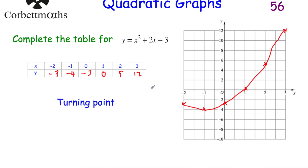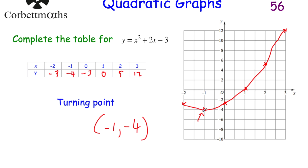There's another part to this question: write down the coordinates of the turning point, also called the minimum point. This graph has a minimum — the lowest point — which is at negative 1, negative 4. When you have an x squared quadratic (U-shaped parabola), the turning point is that lowest point. If it were a minus x squared (N-shaped parabola), you'd write down the coordinates of the maximum point instead.